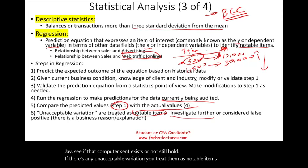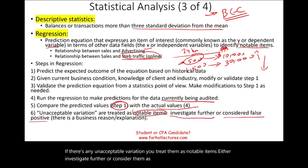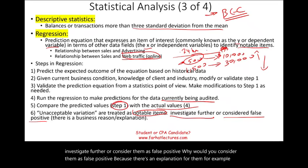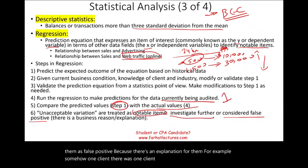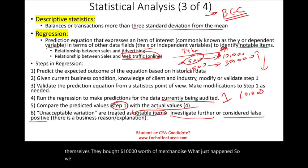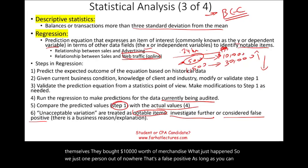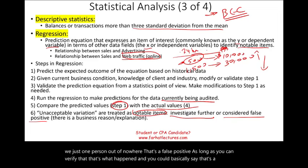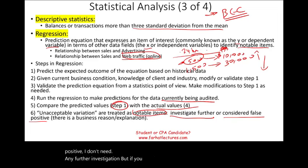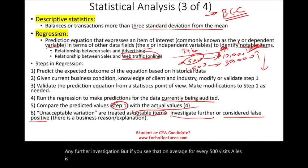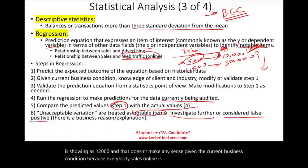You either investigate further or consider them as false positives. Why consider them false positives? Because there's an explanation. For example, one rich client went in and bought $10,000 worth of merchandise — that's a false positive, as long as you can verify it. But if on average for every 500 visits sales is showing as $12,000, and that doesn't make sense given current business conditions because everyone's online sales are going down, then you have to investigate further.